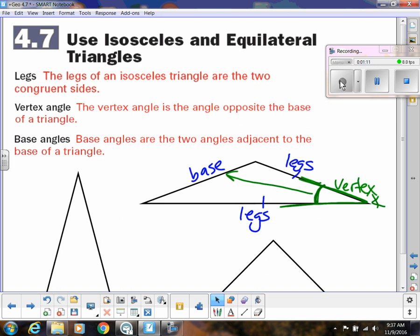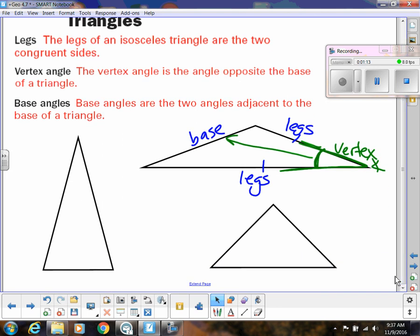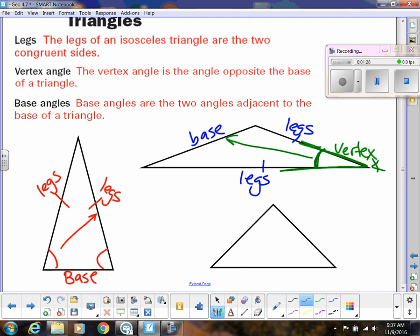And then the base angles, I'm going to use a different triangle. So let's say in this triangle, these are the legs. The base angles are the angles that touch the base. So remember, this is the base, and they are opposite of those legs. So these are the base angles.